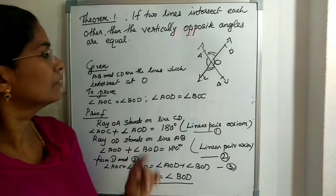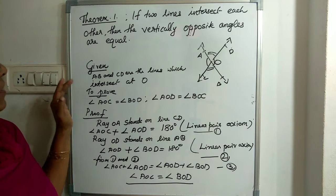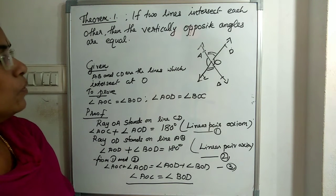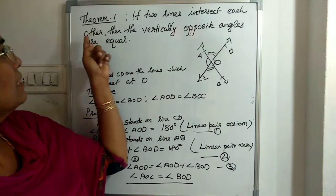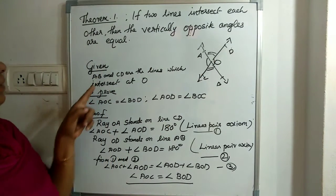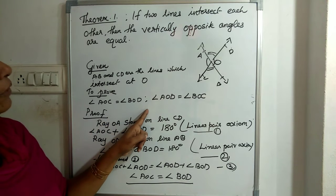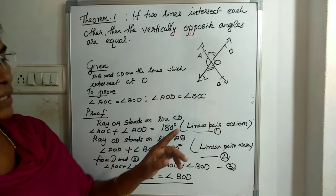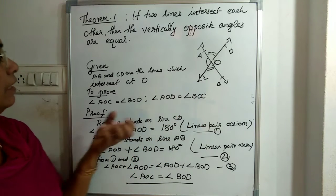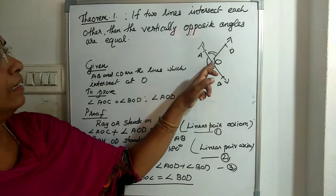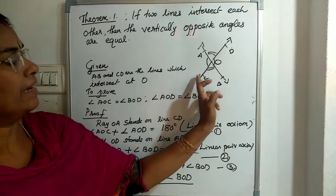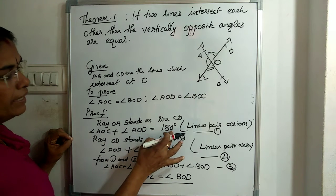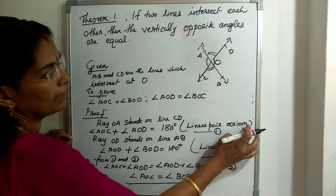Let me summarize the proof once more. First, write what is given: AB and CD are two lines intersecting at O. To prove: angle AOC equals angle BOD, and angle AOD equals angle BOC. For this, ray OA stands on line CD, so the sum of two adjacent angles is 180 degrees — linear pair axiom — giving equation 1. Then ray OD stands on line AB, so the sum of two adjacent angles is 180 degrees — linear pair axiom — giving equation 2.